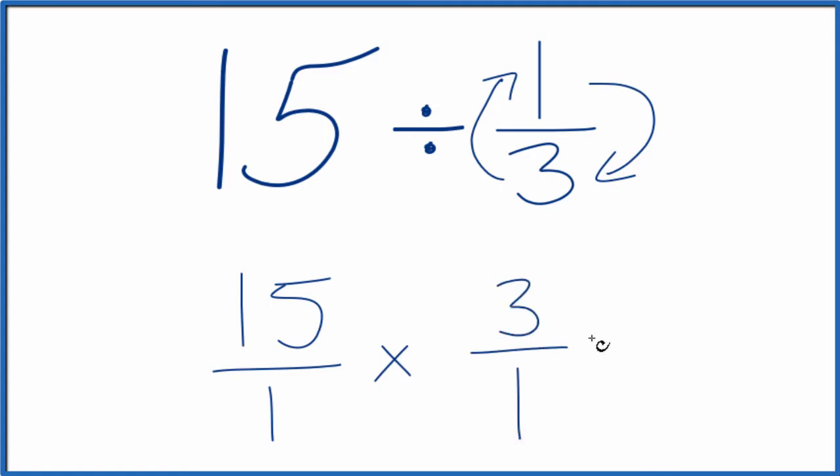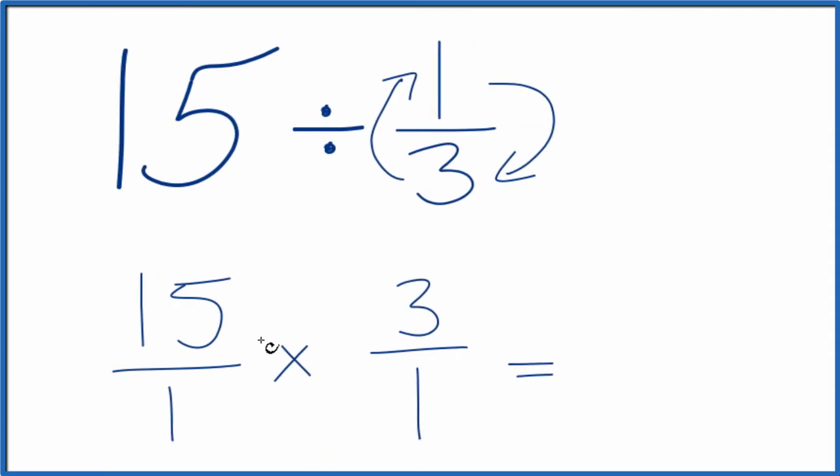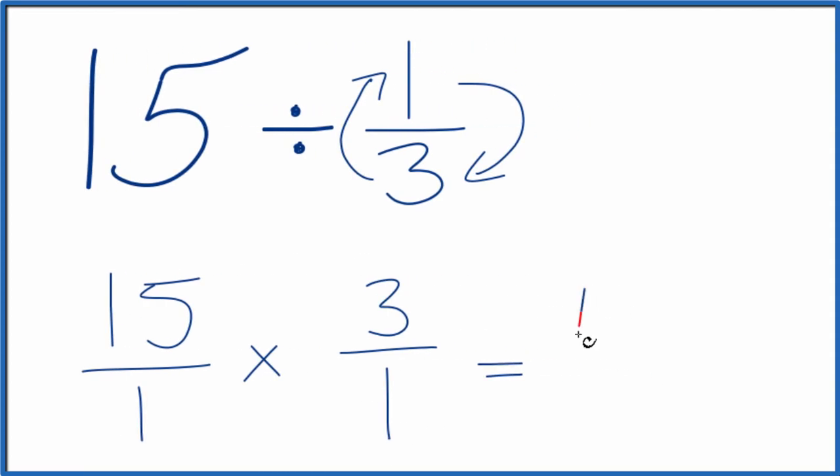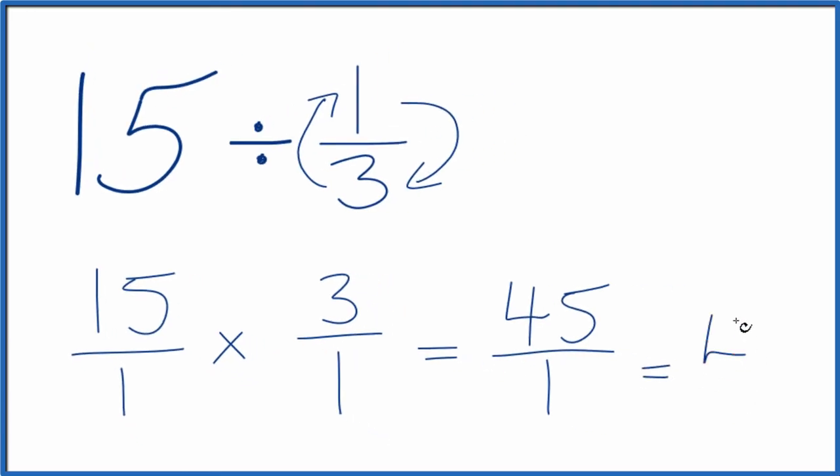Now with fractions, when you multiply fractions, you multiply the numerators and then the denominators. So 15 times 3 is 45, and 1 times 1 is just 1. And 45 over 1, that's just 45.